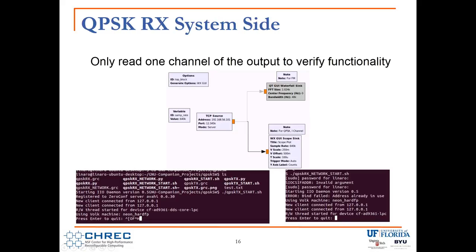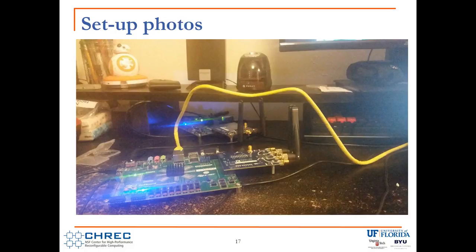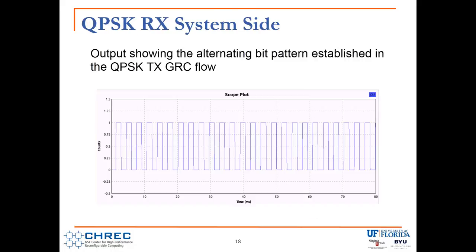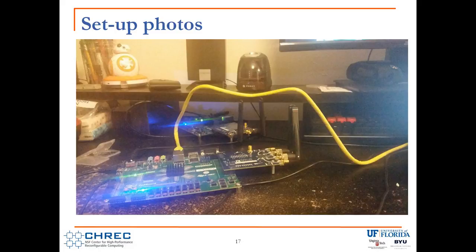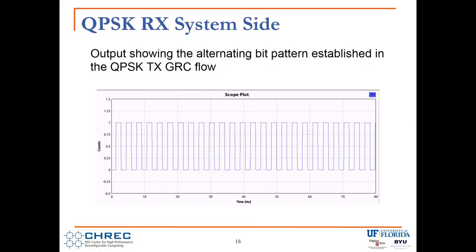At the bottom, you can see what's happening through the UART sessions. On the left is the transmission: after running the script you start the IIO device drivers and connect to the SDR board, then it starts running. The same is shown on the right for the reception scheme. Here's a picture of the physical setup — the two Z-Boards, the two SDR FMC cards, and the Ethernet cable connecting to my computer for visualization. The output from the physical transmission shows the alternating scheme, which matches what was input.